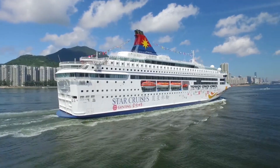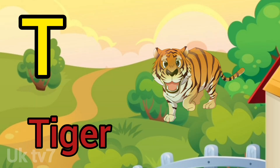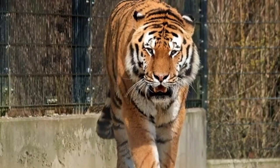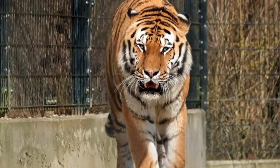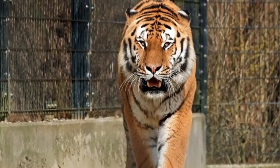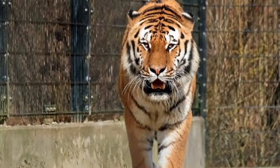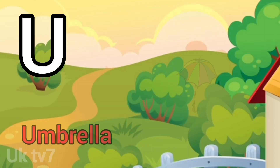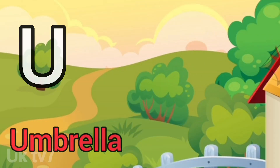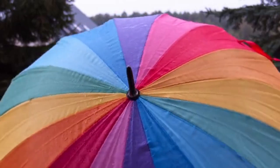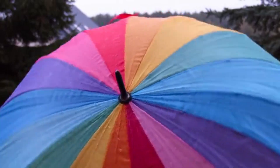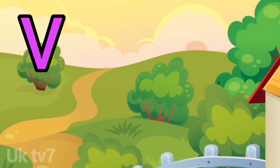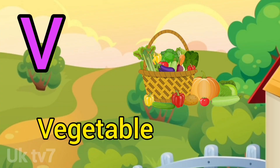S for Ship. T for Tiger. U for Umbrella. V for Vegetable.